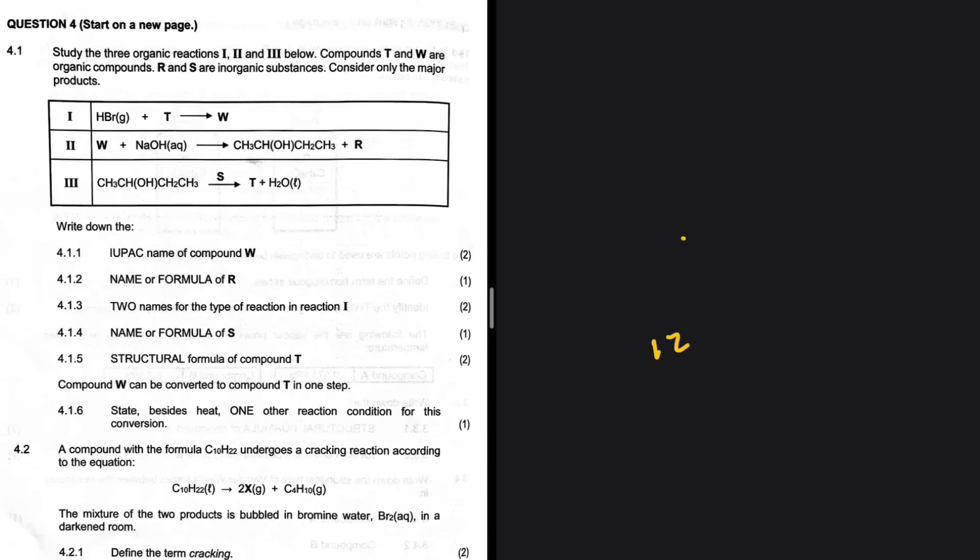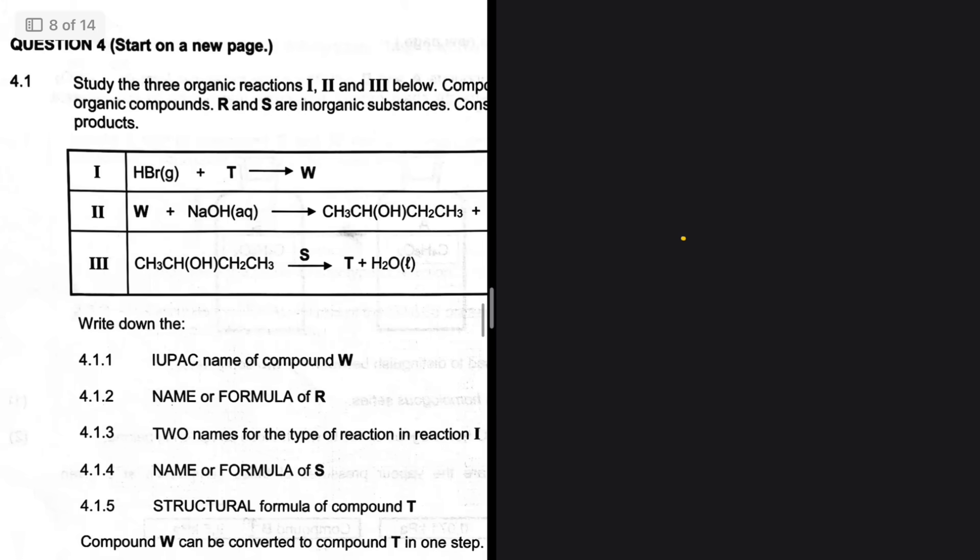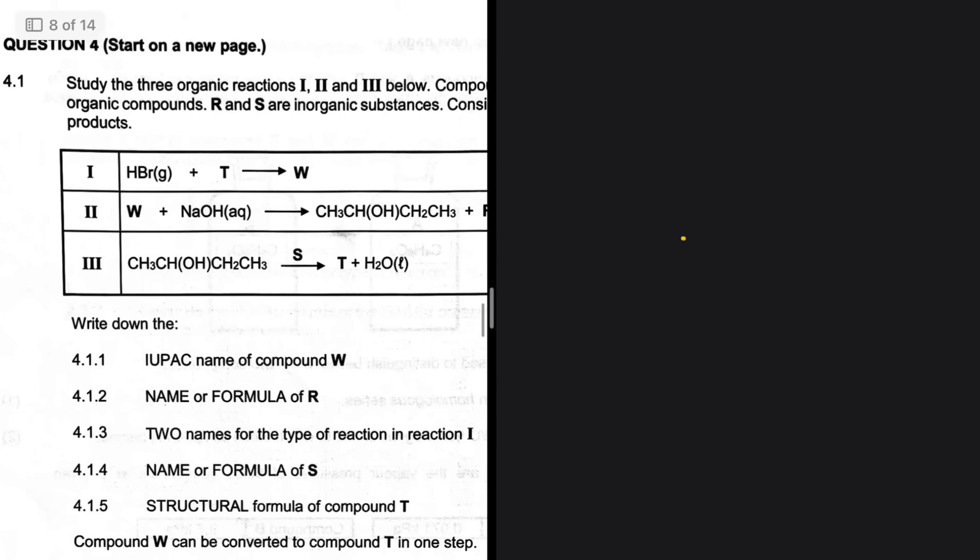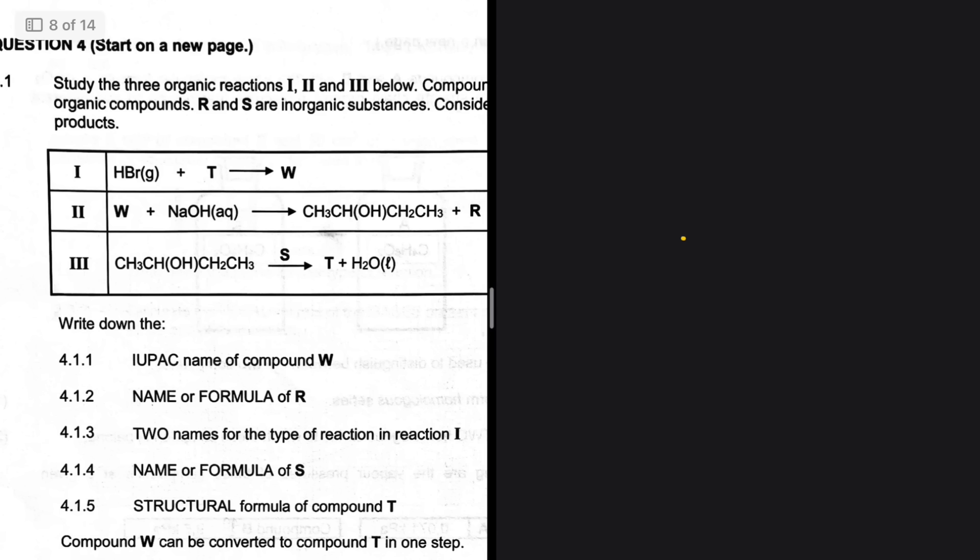Study the three organic reactions below. Compounds T and W are organic compounds, R and S are inorganic substances. Consider only the major products. We're supposed to study these three reactions before we can actually attempt to answer the questions. Let's take a look and see what is happening. We have HBr plus T which gives us W.